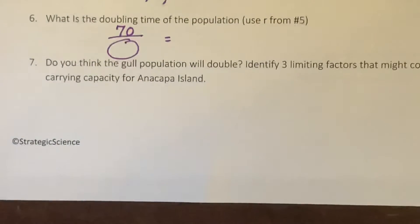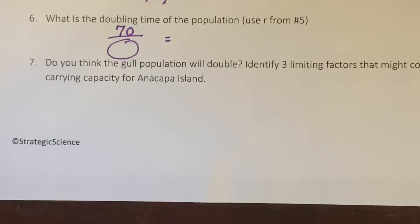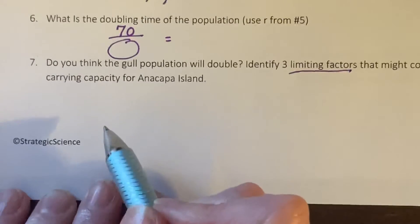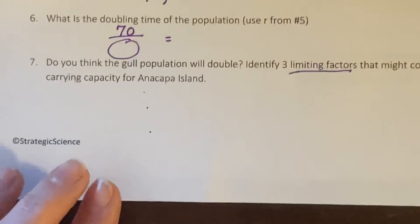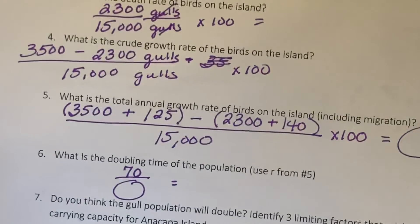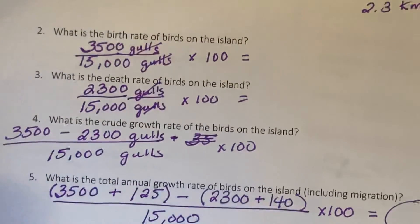Do you think the gull population will actually double? Probably not. What are three limiting factors that would contribute to a carrying capacity on Anacapa? What would limit the gull population size — it can't just keep growing and doubling. What's going to make them die? What are they going to run out of? What might move in to eat them? This is a review of limiting factors — look it up if you forgot, and write down three that would limit the population size for gulls. And that's how you set up population math practice two.